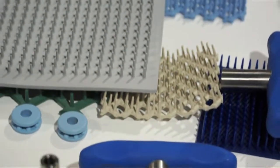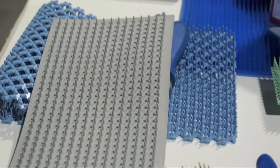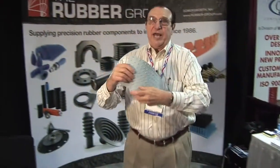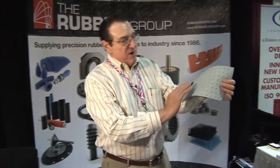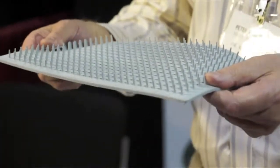It's all custom designed for specific customer applications. Some of them want the actual holes so the steam can penetrate through the holes. Some of them don't want the holes, they just want to elevate the rubber mat a little bit, so we put little dimples on the bottom of it but it kind of serves the same purpose.